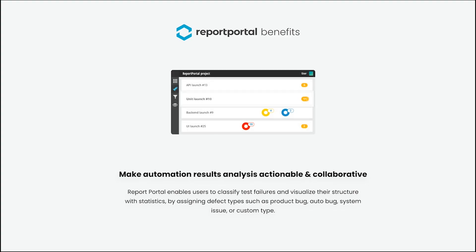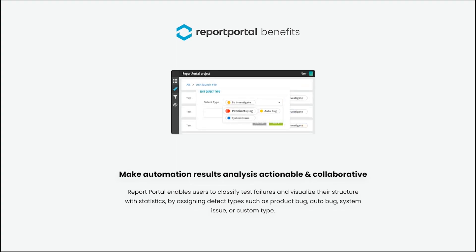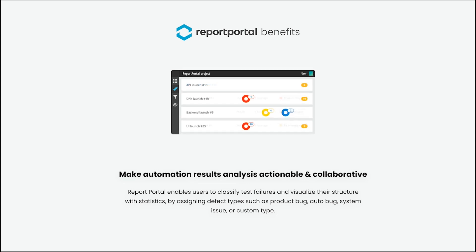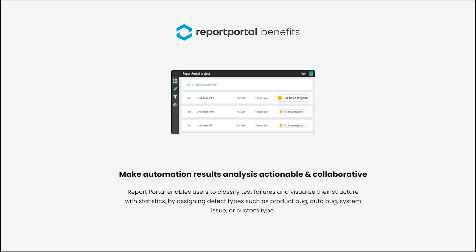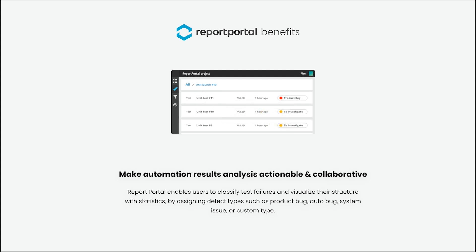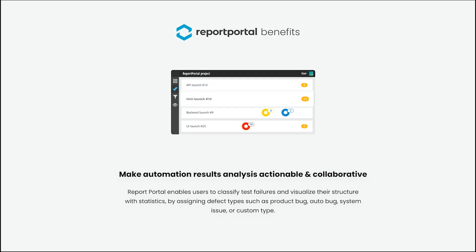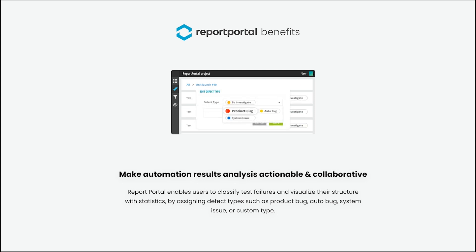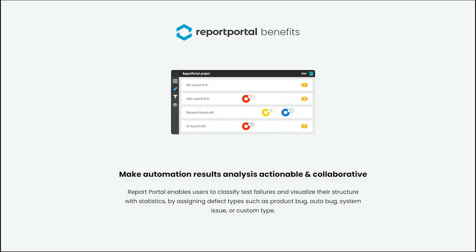Make automation results analysis actionable and collaborative, meaning that you can classify test failures and quickly observe statistics around all tests as a whole. You can define the failure reasons of a test and set a defect type for it – product bug, automation bug, system issue, or custom type – so you can visualize a structure of the failures.